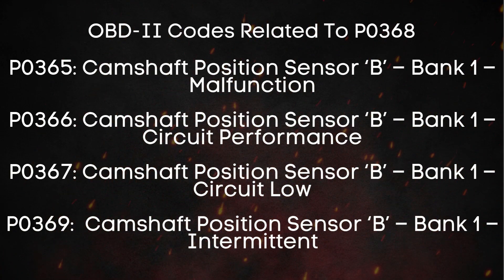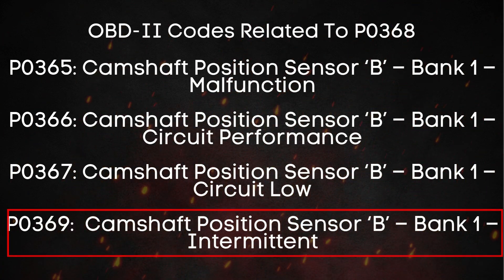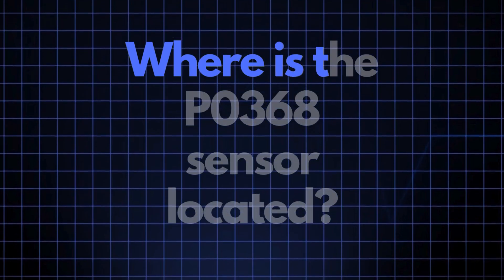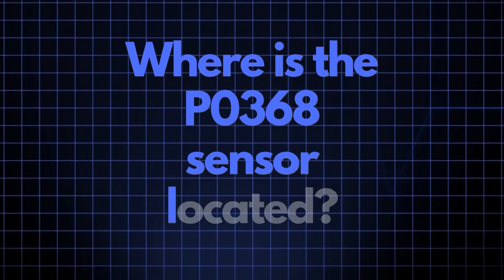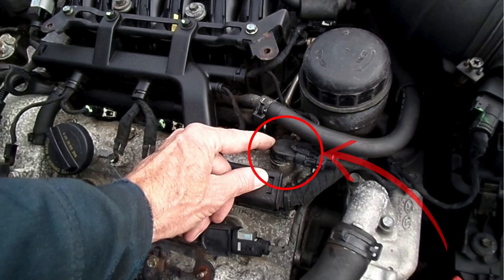And finally, there's P0369, which stands for Exhaust Camshaft Position Sensor for Bank 1 Is Intermittent, meaning the signal is cutting in and out. Now, where exactly is the P0368 sensor located? The camshaft position sensor responsible for triggering the P0368 code is usually positioned close to the camshaft. Its exact location can vary depending on your vehicle's make and model, but you'll typically find it either on the valve cover or directly in the cylinder head.